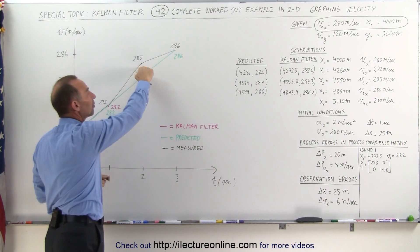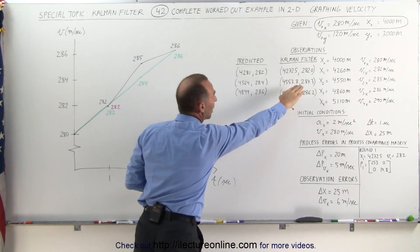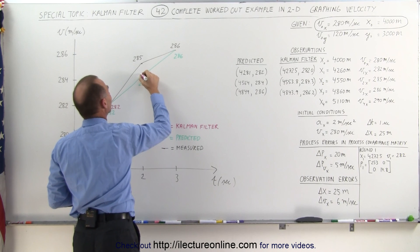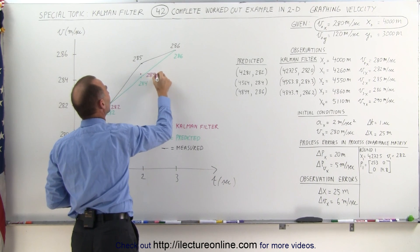But then there's a big jump in the measured value. The Kelvin filter moderates that and puts the estimated value at 284.3.